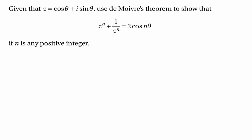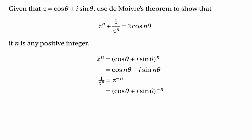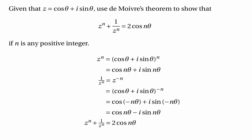z to the power of n is (cos θ + i sin θ)ⁿ, and De Moivre's theorem tells us that's cos nθ plus i sin nθ. Also, 1 over z to the power of n, which is z to the power of minus n, is (cos θ + i sin θ)^(−n). Again using De Moivre's theorem, that must be cos(−nθ) plus i sin(−nθ), which is cos nθ minus i sin nθ. If we add zⁿ and 1/zⁿ, the sine terms cancel out and the cosine term doubles up, so zⁿ plus 1/zⁿ equals 2 cos nθ.